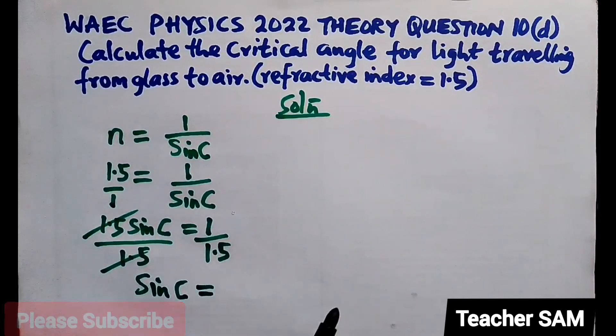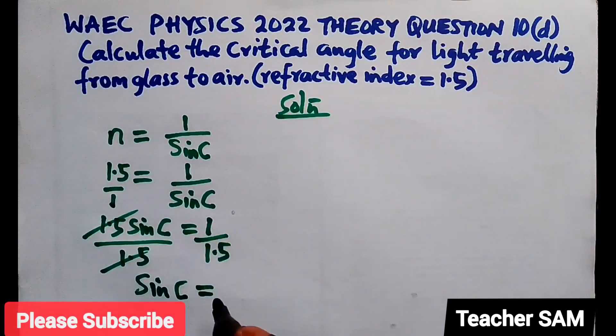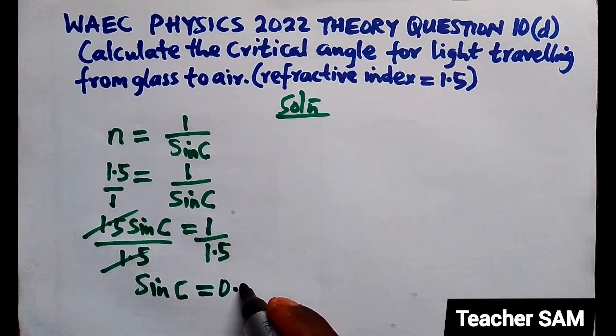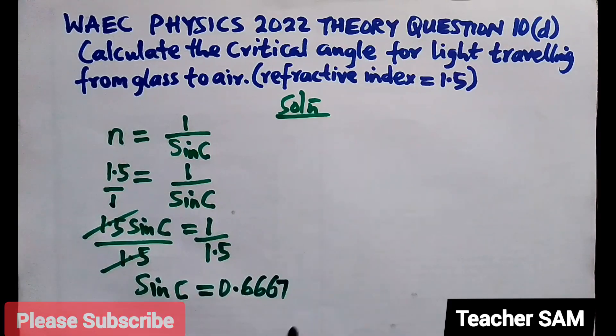Equals 1 divided by 1.5, which gives us 0.6667.